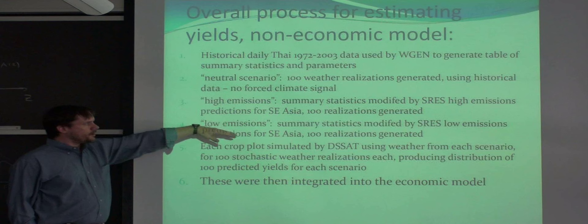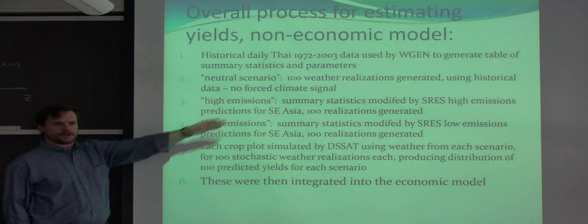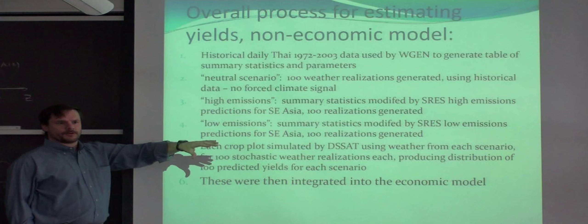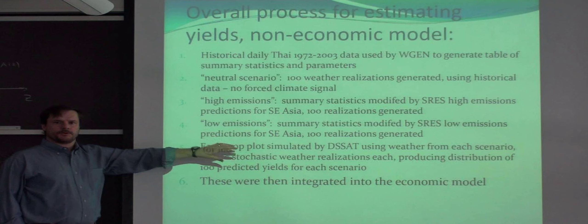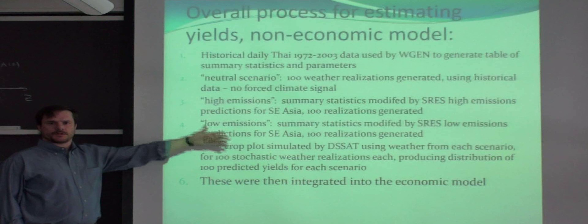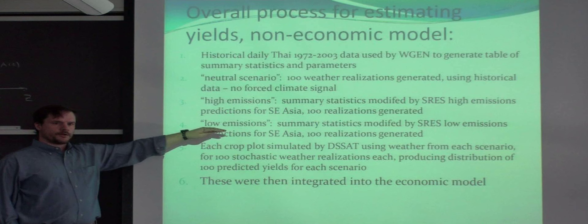With these climate change modifications, we're getting predictions of likely future weather, conditioned on the existing trends and patterns in the historical data, but modified slightly for the climate change signal. And using that, we then go back to DSSAT and we simulate yields. We had 100 realizations for each scenario. So we produced 100 realizations for each plot. The weather generator does a random draw to generate these different stochastic realizations. So we get a distribution for each plot.